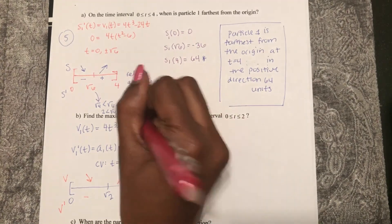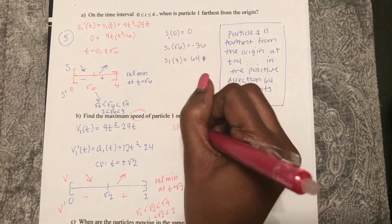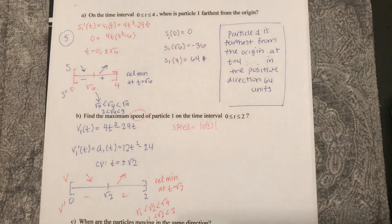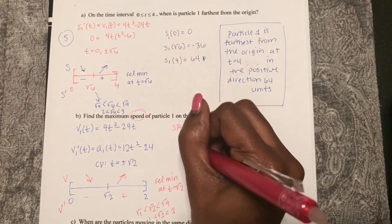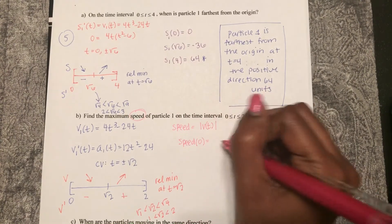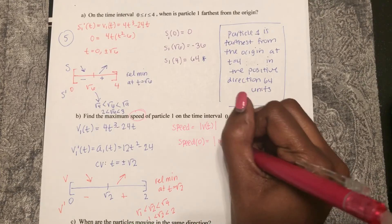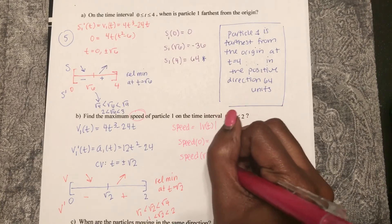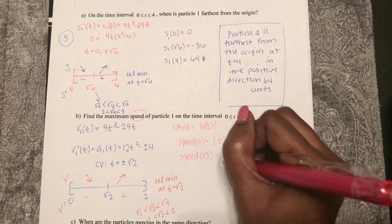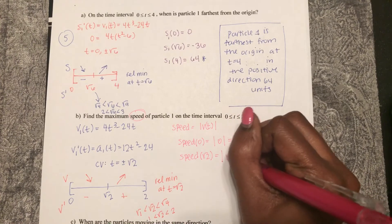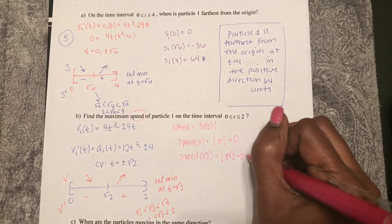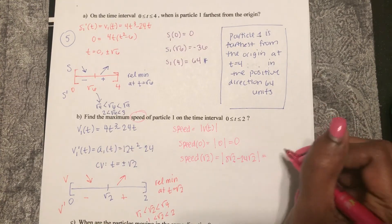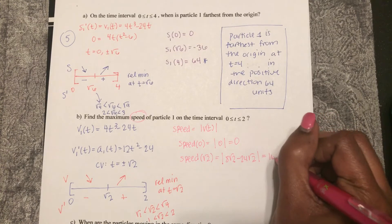Now notice they're asking for speed. Speed is the absolute value of velocity. So let's find speed of zero is the absolute value of zero, which is zero. Speed at square root two is the absolute value of 8 square root two minus 24 square root two. I'm plugging in square root two in here equals 16 square root two.